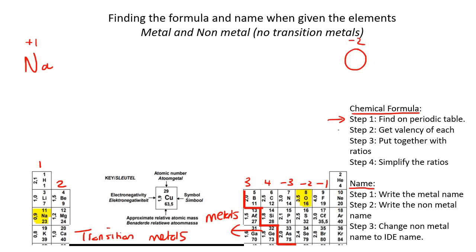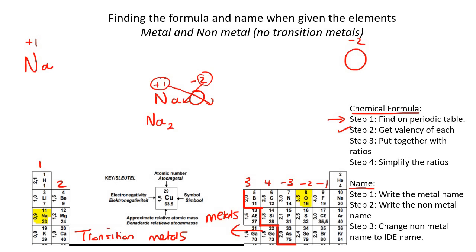Put them next to each other — Na and O — with plus one and minus two. Now take this number and give it to the other element, and vice versa, ignoring the negative signs. So it becomes Na₂O₁. When there's a one, you can just ignore it, so the chemical formula is Na₂O.